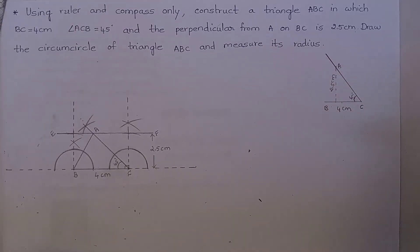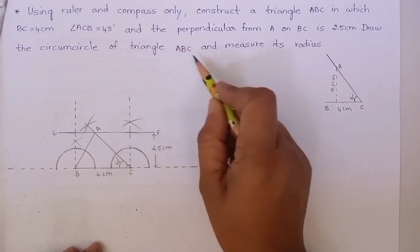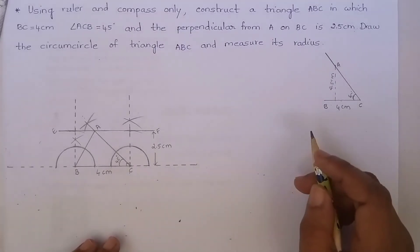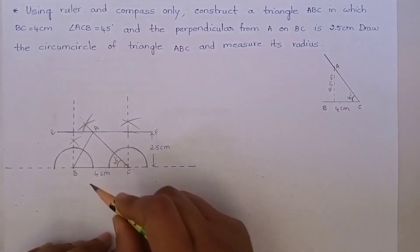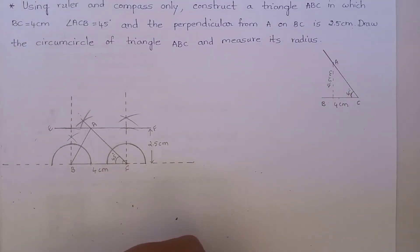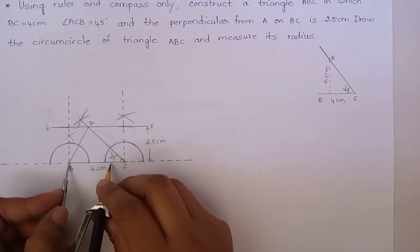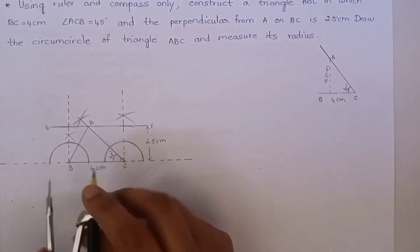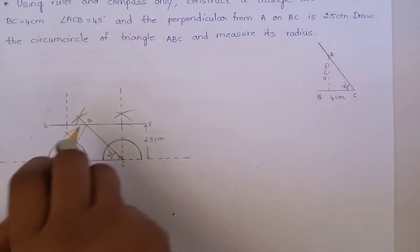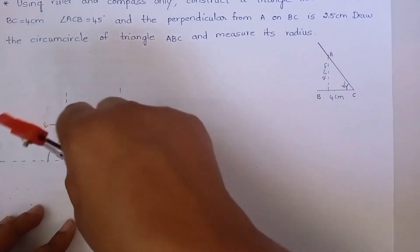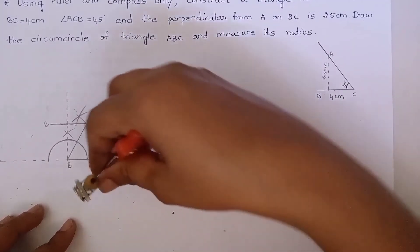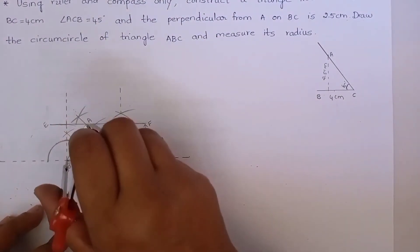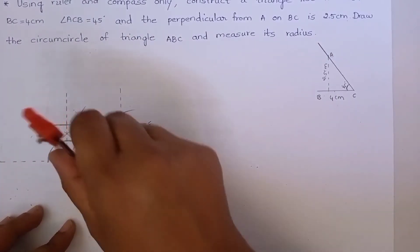Now let us move on to the second part of the question: draw the circumcircle of triangle ABC and measure its radius. We know that to draw a circumcircle to the triangle, we have to take the perpendicular bisector of any two sides. Let me take the perpendicular bisector of BC. To construct a perpendicular bisector for BC, we have to take more than half of BC. This is more than half of BC. Keep the compass on the point B and draw an arc. Keep the compass on the point C and cut an arc. Now join this.